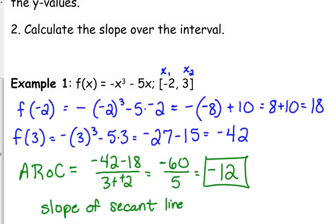Because you subtract, so it was 3 minus negative 2, subtracting the negative is the same as adding positive. So yes, negative 12 is the slope of the secant line between x is negative 2 and x is positive 3 for this function.